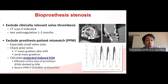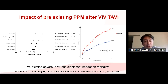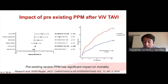Severe patient-prosthesis mismatch is present if this ratio is below 0.65. This is important because severe PPM at baseline has a significant impact on mortality after valve-in-valve TAVR, as demonstrated in the valve-in-valve registry by P. Baro — a very large registry — where severe PPM was an independent predictor of mortality during follow-up.